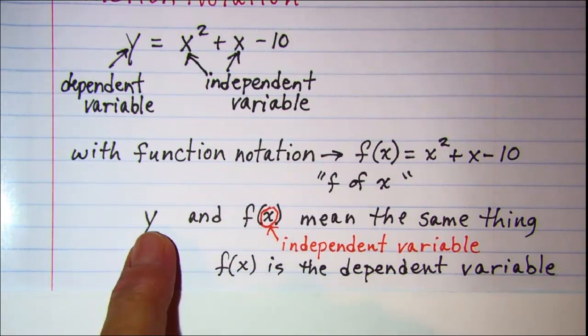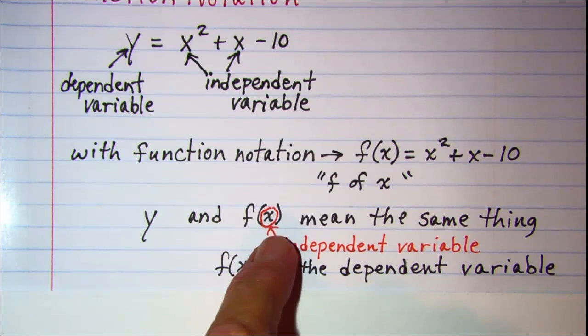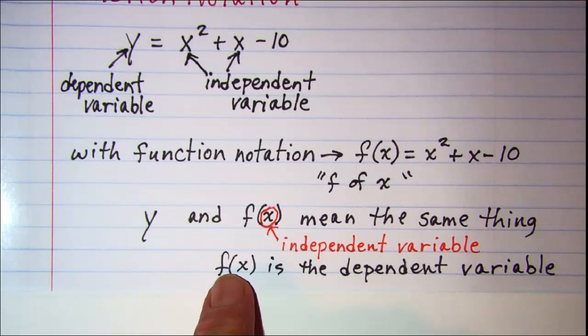So y and f(x) mean the same thing. We can see our independent variable is the x and you'll see that in the argument of our function notation, and then f(x), which is y, is the dependent variable.